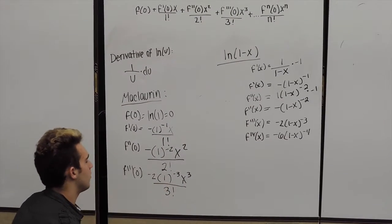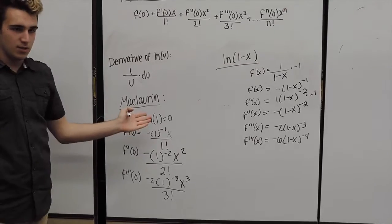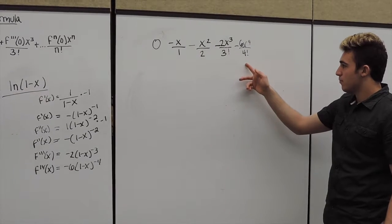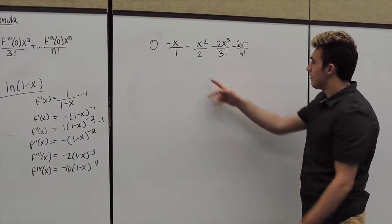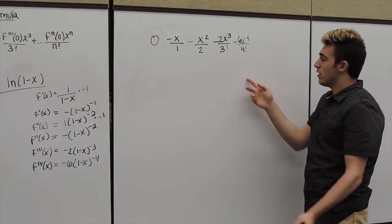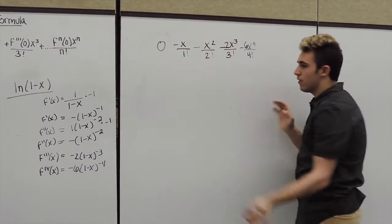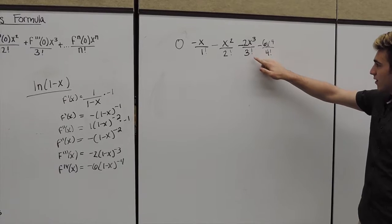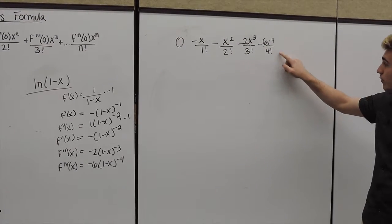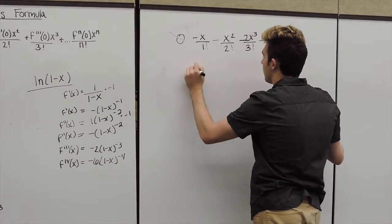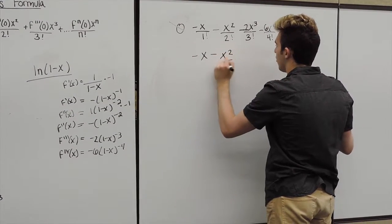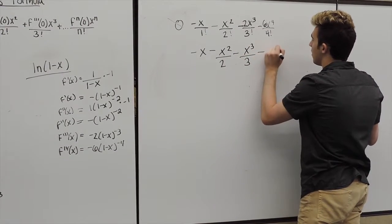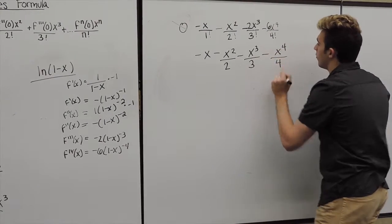So once you guys get these, you can simplify them. Now once you have your basic format, we're going to put this into our Maclaurin series. So we have our negative x over 1, minus x squared over 2. We can simplify our 2 x cubed over 3 factorial and our 6 x to the fourth over 4 factorial. So we get negative x minus x squared over 2, minus x cubed over 3, and minus x to the fourth over 4.